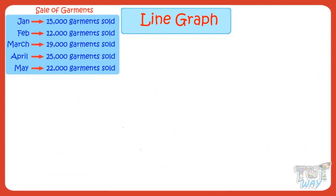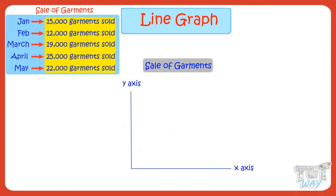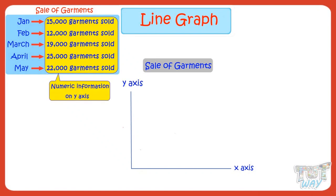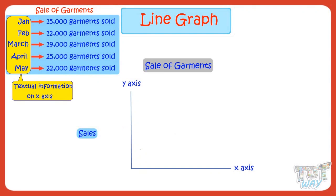First of all, let's give a title to our graph — let it be 'Sale of Garments'. Now, we always have two axes in a graph: x-axis and y-axis. We depict one type of information on x-axis and the other on y-axis. The two types of info we have are names of months, which is textual information, and sale of garments in a month, which is our numeric information. Always show numeric information on y-axis preferably. Let y-axis show the sales, and let x-axis show the names of months.